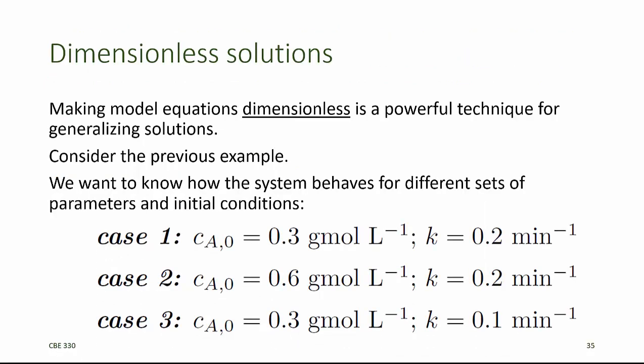Now, we want to know how the system behaves for different sets of parameters and initial conditions. Cases 1 and 3 here have the same initial condition, but different values for the rate coefficient, and cases 1 and 2 have the same rate coefficient, but different values for the initial condition. We don't have to solve the model again, because we already have an analytical solution that's exact for any values of CA0 and any values of K.